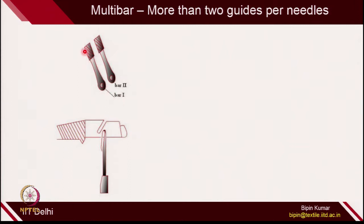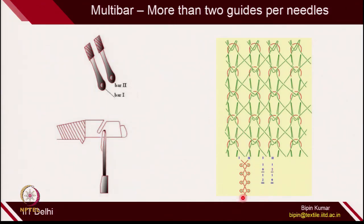For example, one guide is connected with bar 1 and the second guide is connected with a different bar. You can plan bar 1 as a tricot, atlas, or pillar construction. Similarly, for bar 2, you can choose any combination of guide movement. In this way, the 2 combinations of guide movement are combined together and different types of fabric structures can be generated. As a 2 bar or multi-bar construction, you need to provide the lapping diagram and plan for 2 different guides — for each guide, you need to draw both the lapping diagram and lapping plan. This is the only difference between single bar and double bar construction.